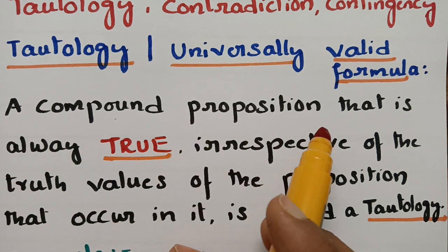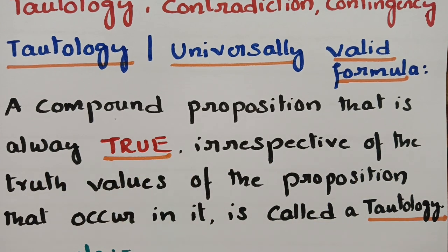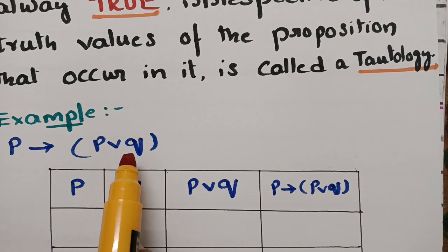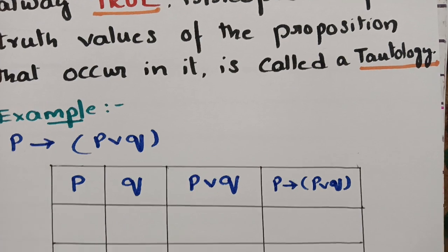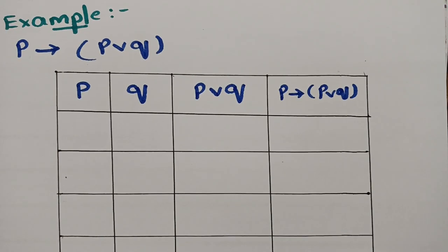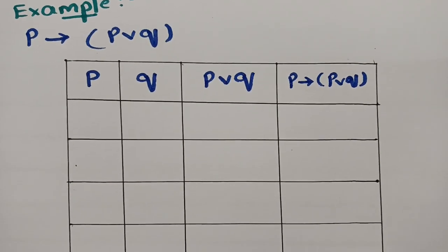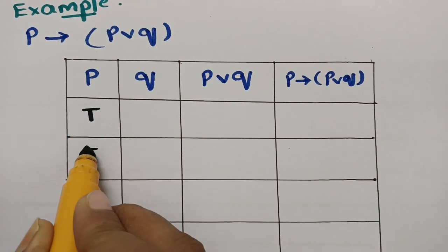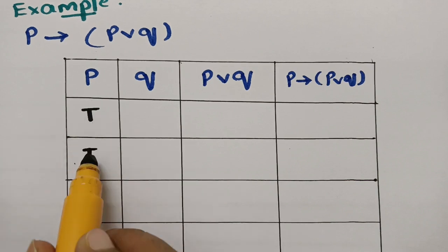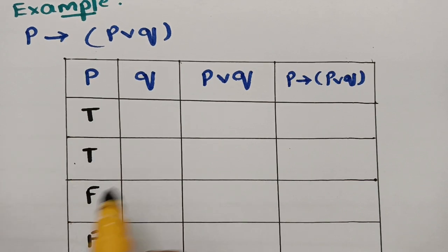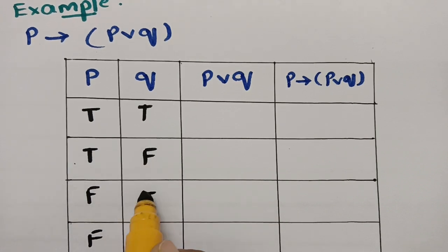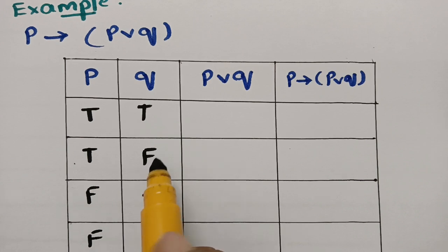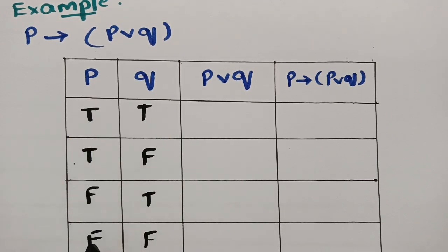The compound proposition is always true. Let me give you an example: p implies (p or q). In the truth table, I will show how the compound proposition is always true. Let me take all the values: true, true, false, false for p — true for two times and false for two times. And for q: true, false, true, false — true for single time, false for single time.